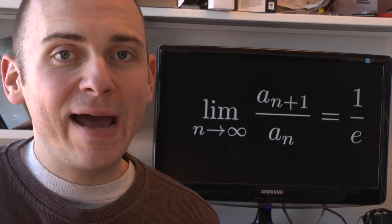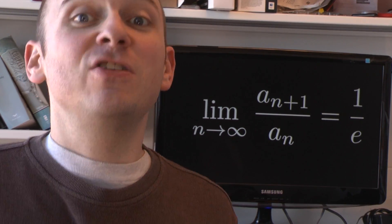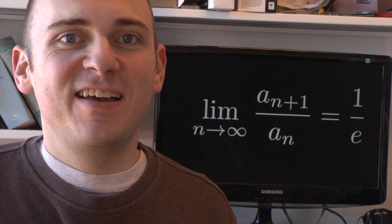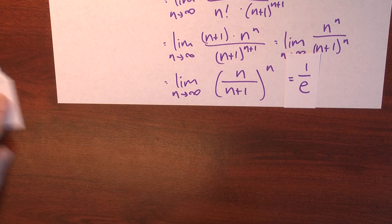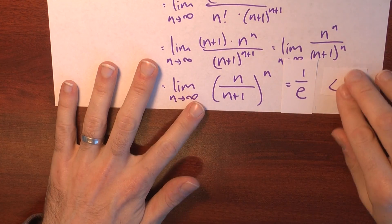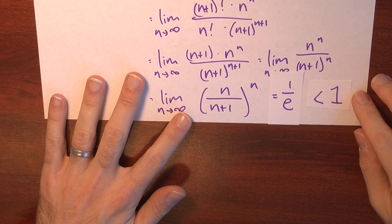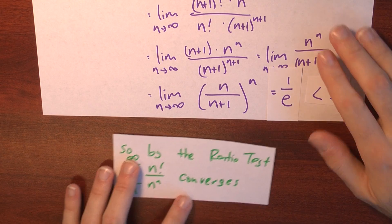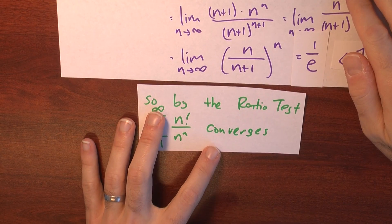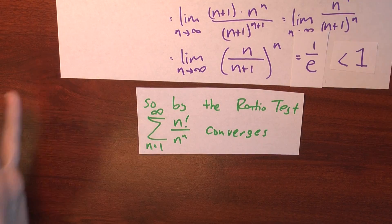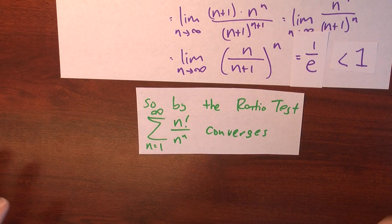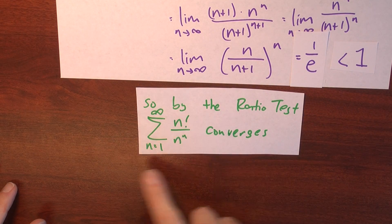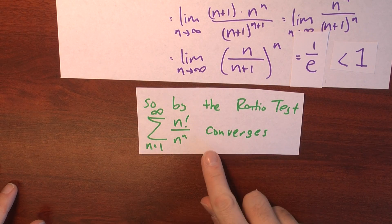What does that imply about the original series? 1/e is less than 1, and that means that according to the ratio test, the given series converges.